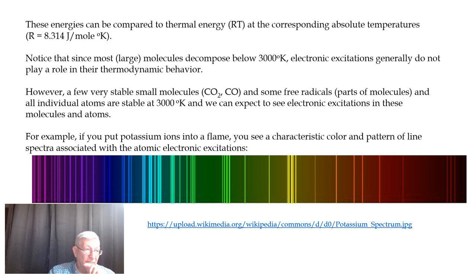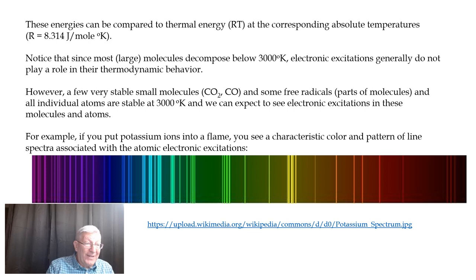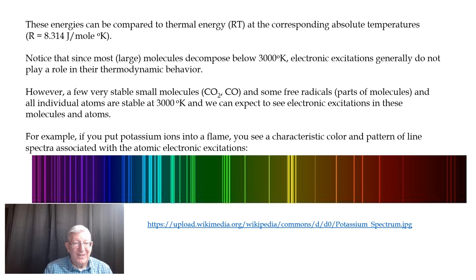The energies I've calculated are based on RT, where R is 8.314 joules per mole per Kelvin — the heat capacity of an ideal gas in joules per mole per degree Kelvin. Since most large molecules decompose at 3,000 degrees Kelvin, we usually don't need to worry about electronic transitions. At 3,000 degrees Kelvin, atoms exist, and some very stable molecules such as carbon dioxide and carbon monoxide may exist.